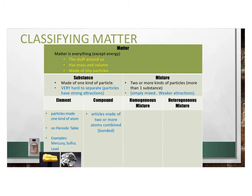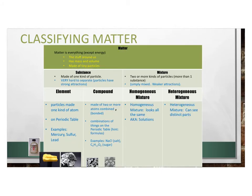A few more things about elements: where do we find names of elements? On the periodic table. Examples include mercury, sulfur, and lead. Compounds have two or more kinds of atoms combined — they are combinations of things on the periodic table. A hint is that they have formulas. For example, NaCl has a formula — it is salt. C6H12O6 has a formula — it's sugar. So again, single kinds of particles, but made of more than one kind of atom stuck together.